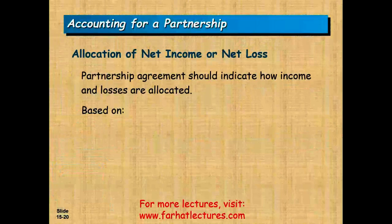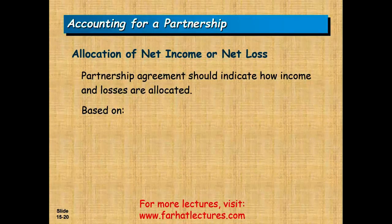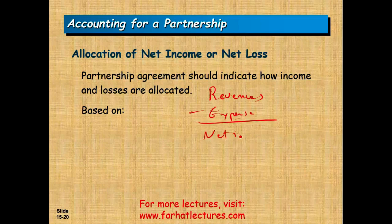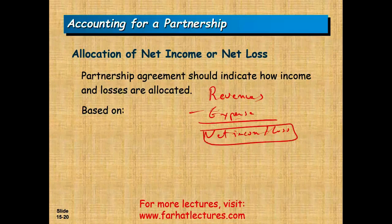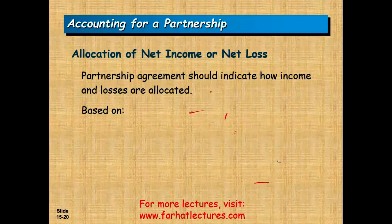In this session we're going to look at how partners allocate net income and net loss. The overall idea — and I want you to think about Forrest Gump — is that the partnership is a business. They generate revenues and incur expenses, and at the end of the year they'll have either a net income or a net loss. The question is: what do we do with this net income and net loss? Like Forrest Gump, they split it — perhaps 50-50.